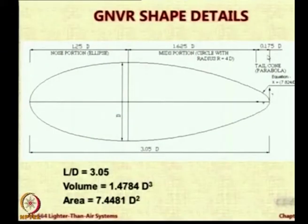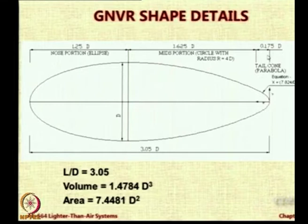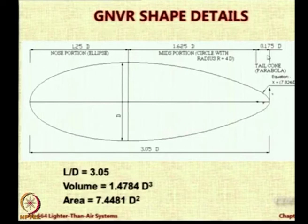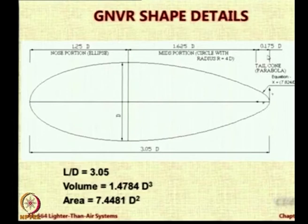Interestingly, the complete coordinates of this shape can be obtained analytically in terms of diameter. If I say GNVR shape of diameter equal to 1 meter, I do not have to say anything else — all of you can individually get the exact coordinates from nose to tail. Not only that, you can analytically calculate the volume and area in terms of diameter. Just multiply the diameter cubed by 1.4784 and you get the exact volume of this shape. Multiply diameter squared by 7.4481 and you get the exact surface area. These numbers have not come from numerical integration — they have come from analytical derivation, so they are exact.